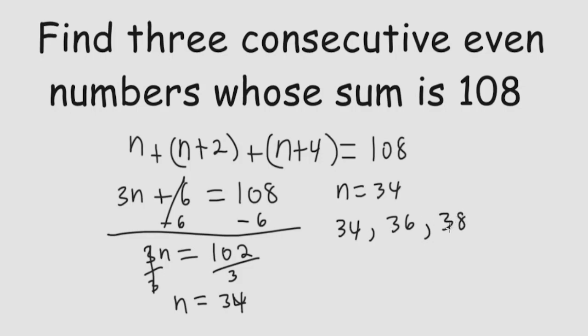Three consecutive even numbers. So we'll add those together, 34 plus 36 plus 38. And we get 108 from these three numbers.